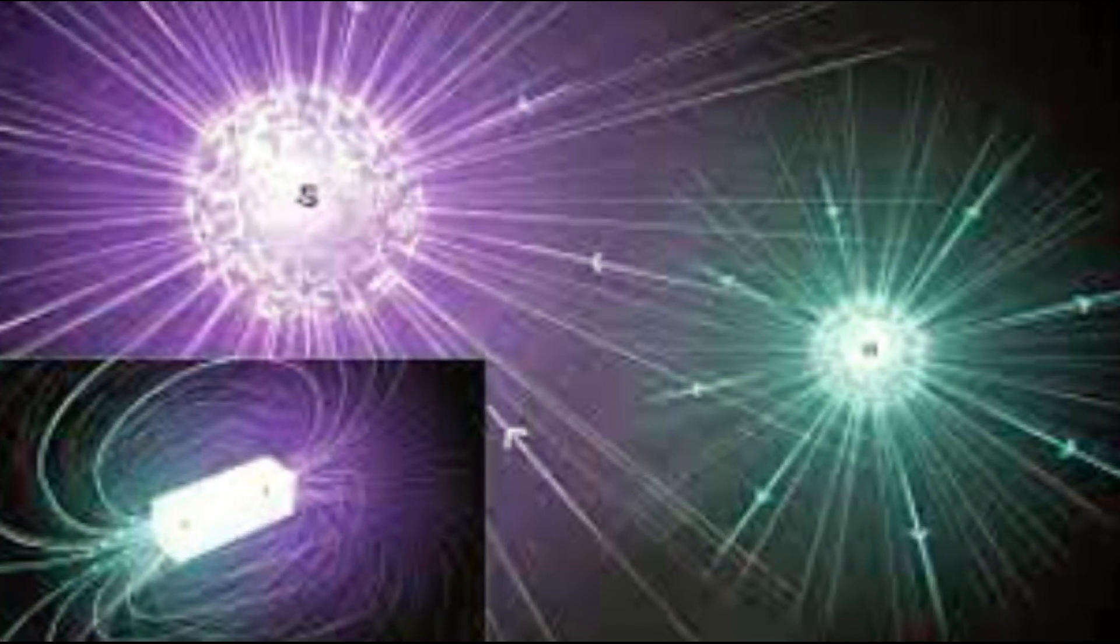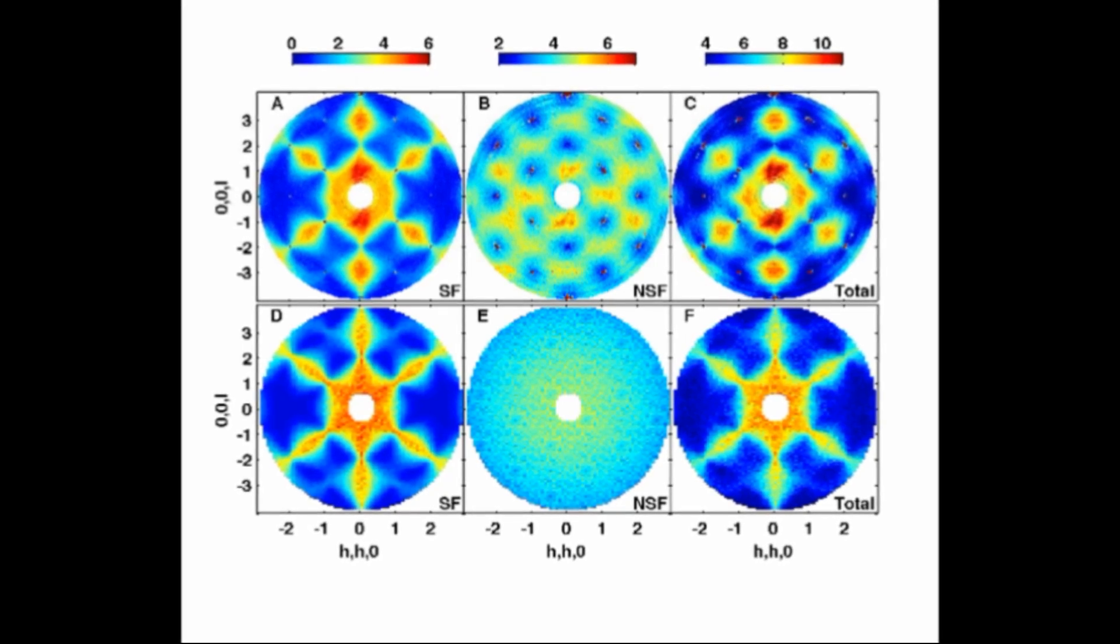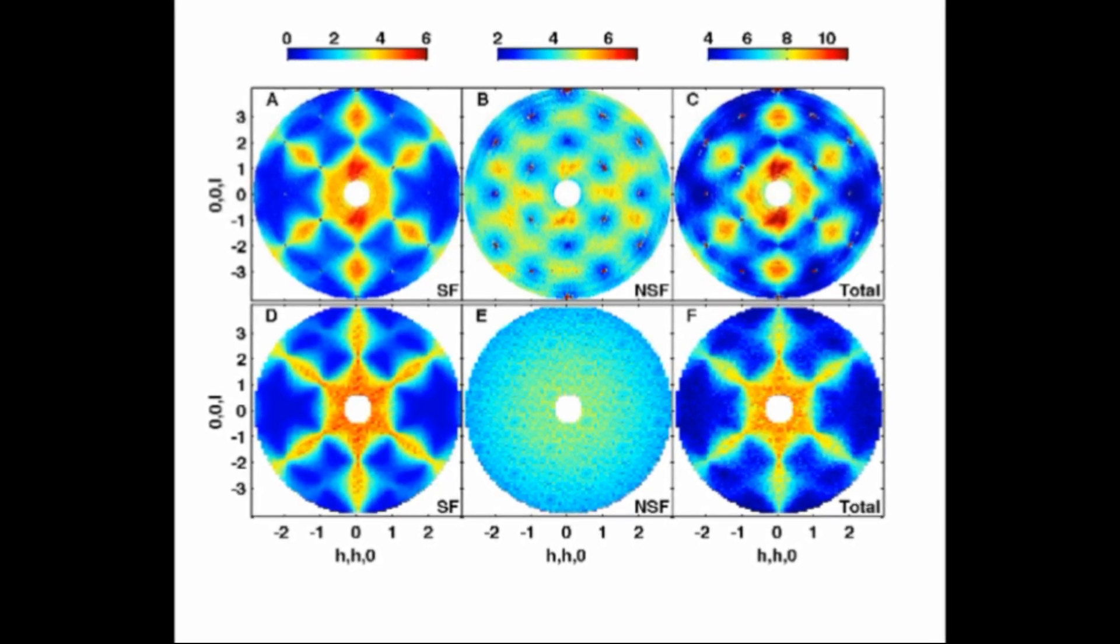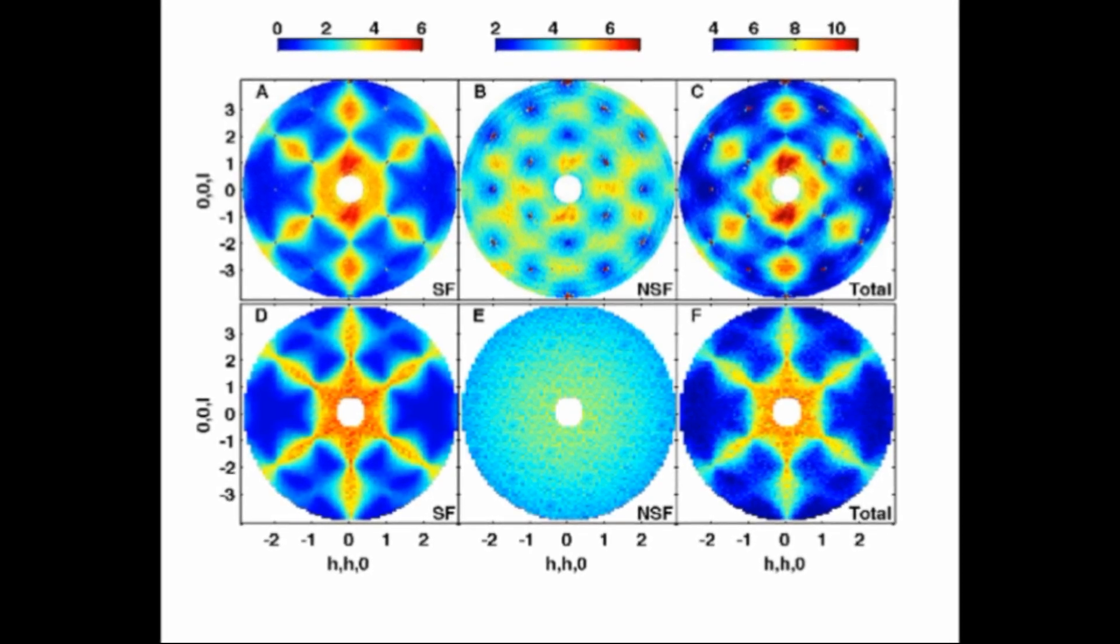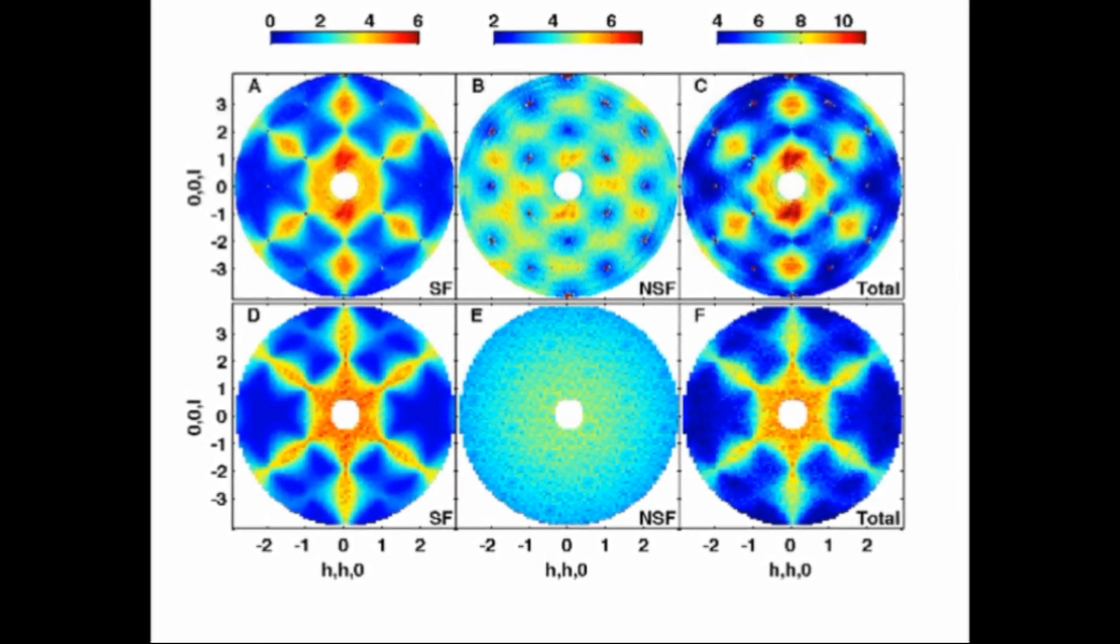According to certain theoretical theories, magnetic monopoles are too rare in the universe and too hefty to form in particle accelerators, making it unlikely that they would be detected in particle detectors.